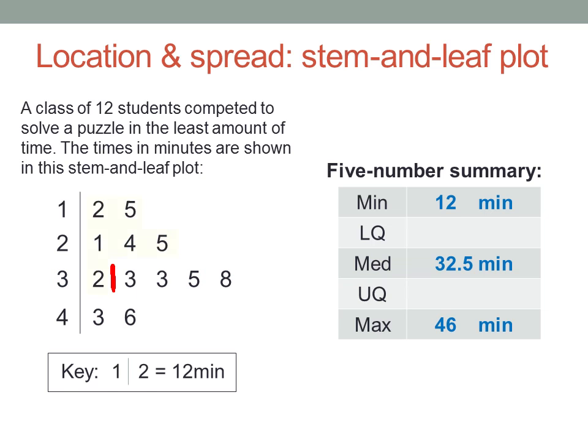Then the lower quartile is the median of the lower half. Do the same thing again with the lower half of the scores. Remember, the median in this case is not actually a data value, because there's an even number of scores. So the lower half here has six scores. That means the lower quartile is halfway between the third and the fourth scores, which is twenty-two and a half.